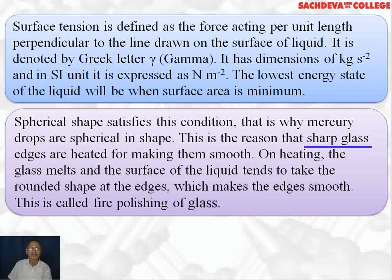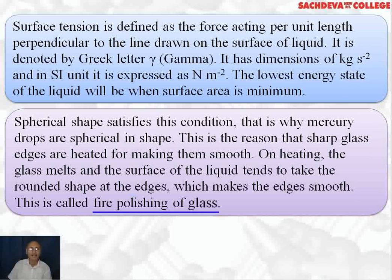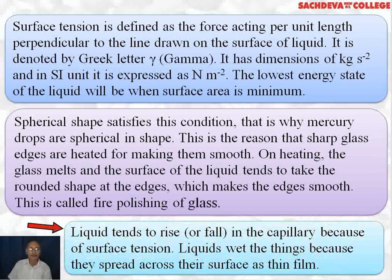Sharp glass edges are heated for smoothing — on heating, glass melts and the liquid surface takes a rounded shape at the edges. This is called fire polishing of glass. Liquid rises or falls in a capillary because of surface tension. Water rises in a glass capillary because adhesive forces between water and glass are greater than the cohesive forces between water molecules. Mercury does not stick to glass because cohesive forces between mercury atoms are greater than adhesive forces between glass and mercury atoms.